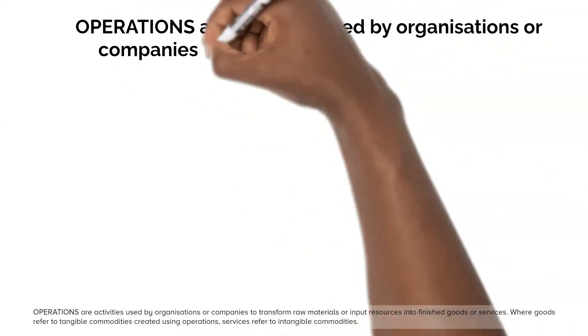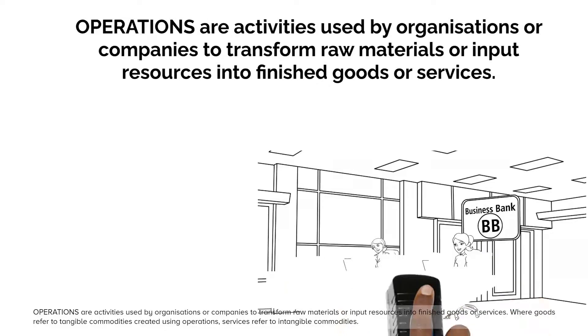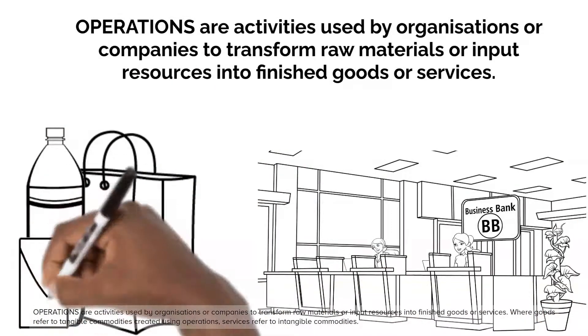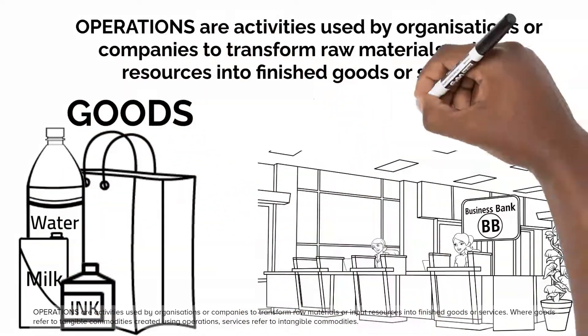Operations are activities used by organizations or companies to transform raw materials or input resources into finished goods or services. Goods refer to tangible commodities created using operations, while services refer to intangible commodities.